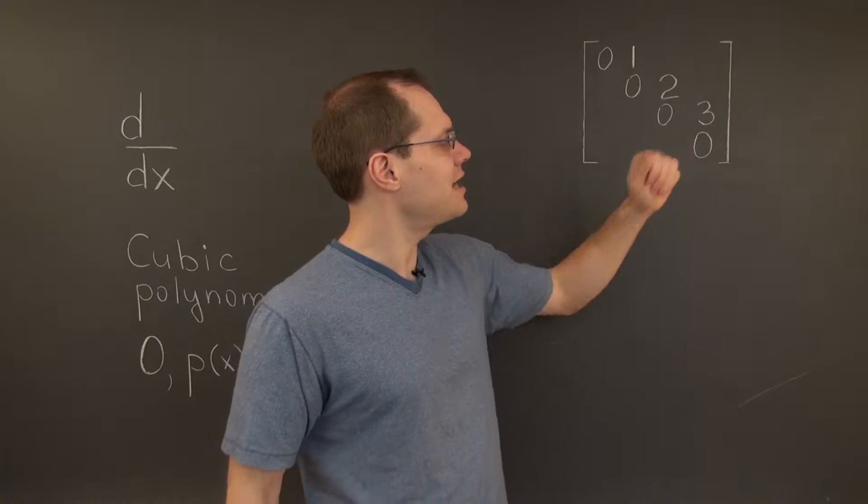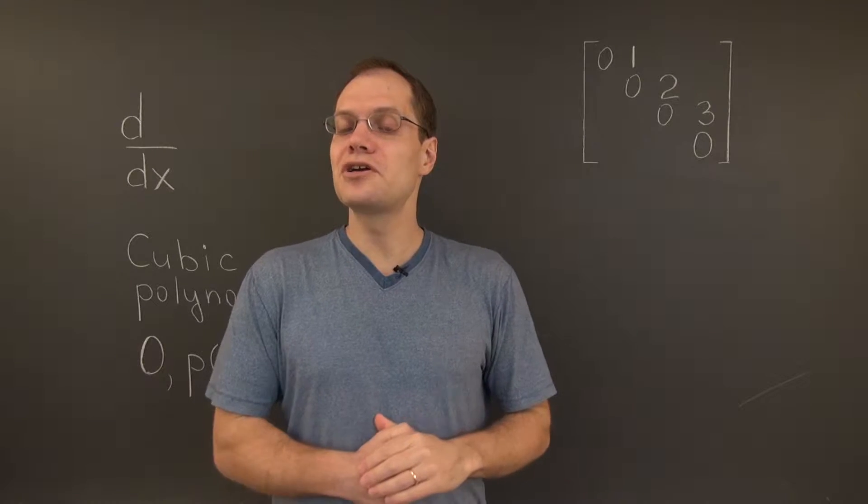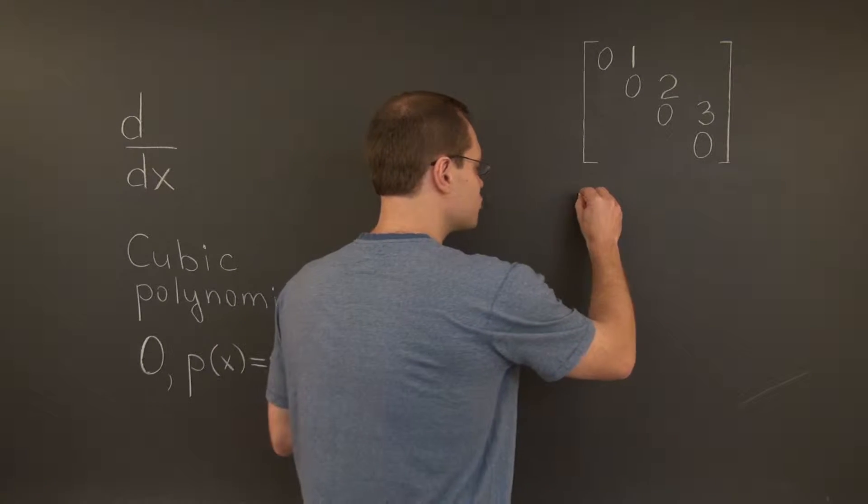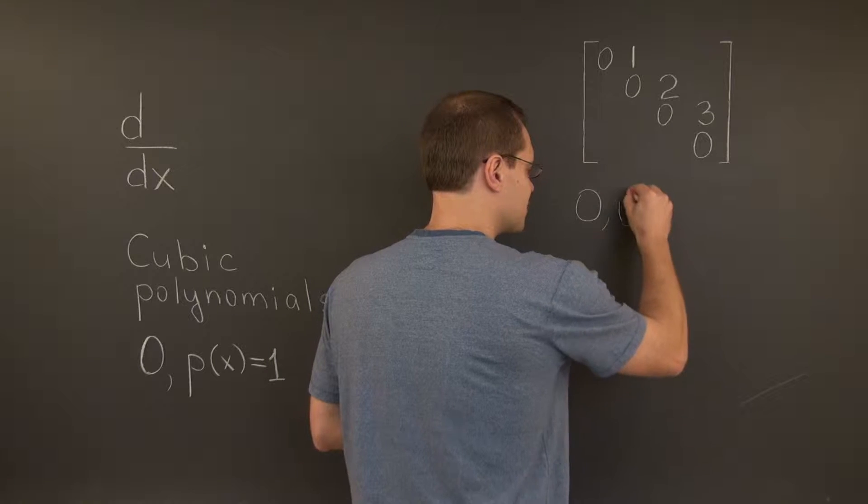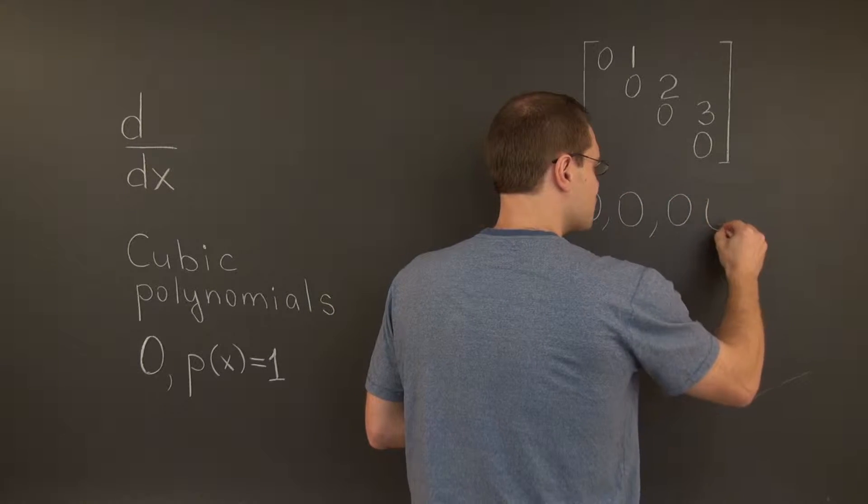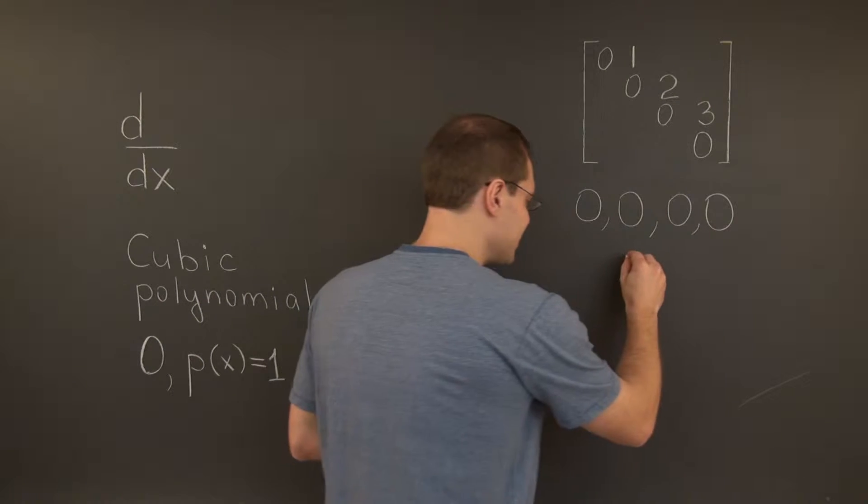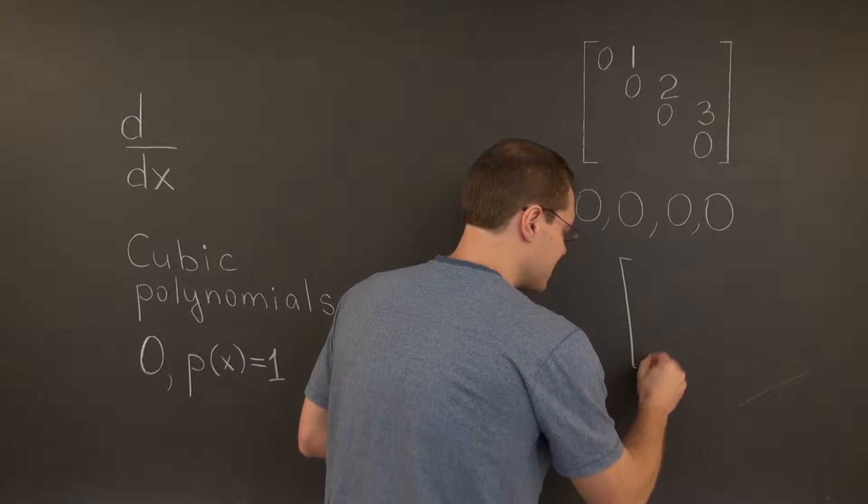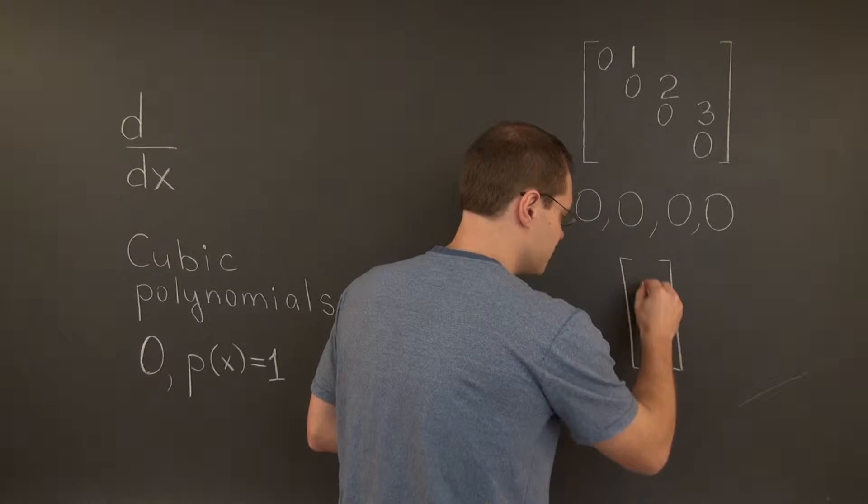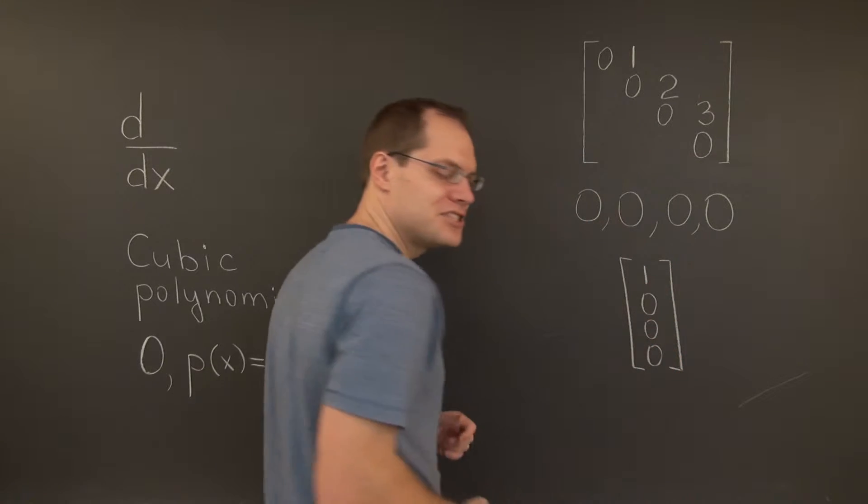And therefore, if we performed eigenvalue analysis on this matrix, we would conclude that zero is a quadruple eigenvalue of this matrix. Its algebraic multiplicity is 4, and the corresponding eigenspace represented by the vector (1, 0, 0, 0) is one-dimensional.